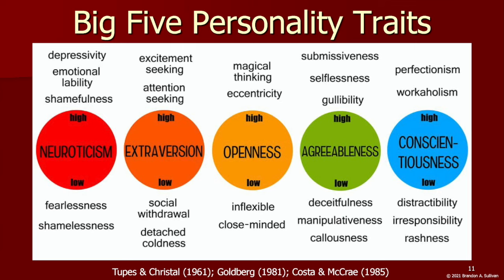These ideas were later adapted by several other psychologists into what became known as the Big Five personality traits, which in addition to neuroticism and extroversion, also include openness to new ideas, experiences, and adventures; agreeableness — cooperating with and doing things for others; and conscientiousness — preparing, paying attention, staying on task. Different variations on these traits have been associated with antisocial behavior, antisocial being a general term indicating a lack of consideration for how our actions impact others, as well as aggression, which are also linked with criminal behavior.